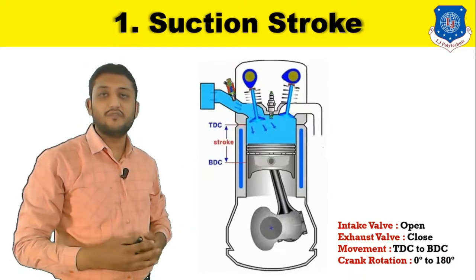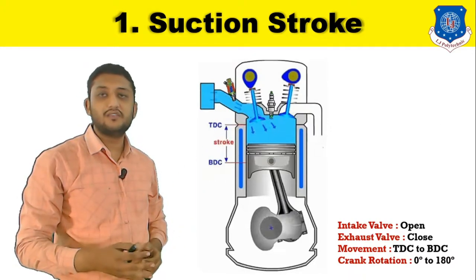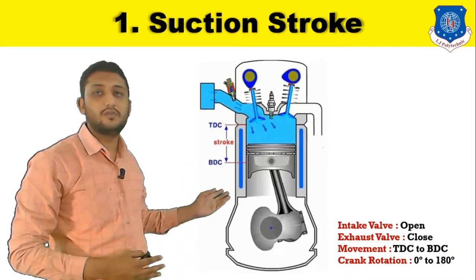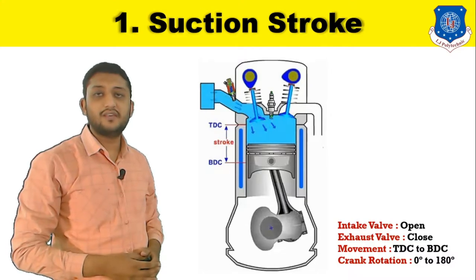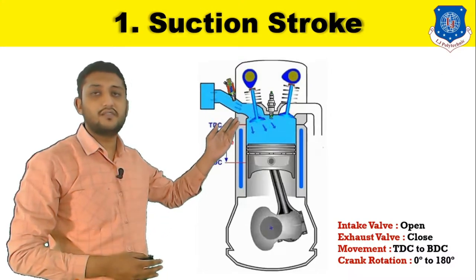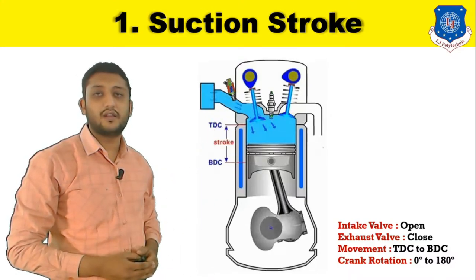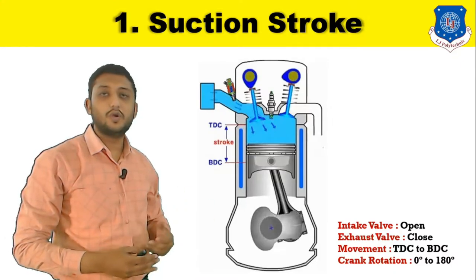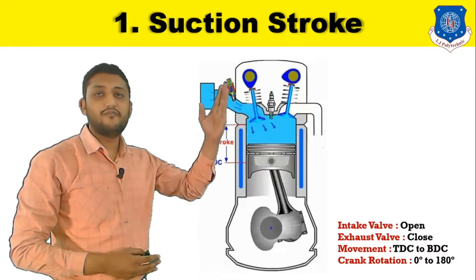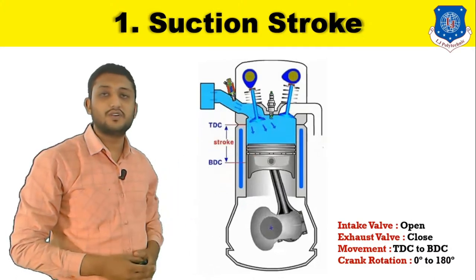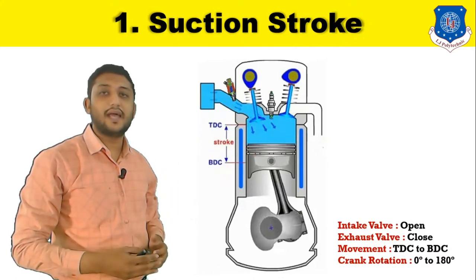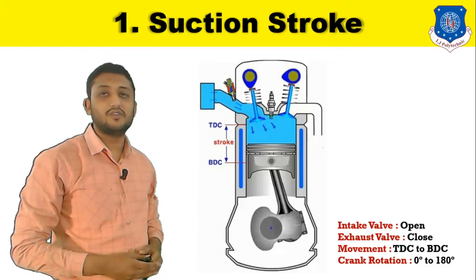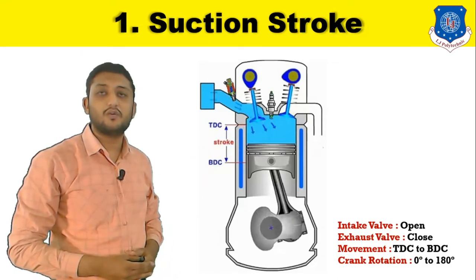The entering of the air and fuel mixture is due to the movement of the piston from top dead center to the bottom dead center. As the piston moves from TDC to BDC, there is a negative pressure inside the cylinder, and due to that negative pressure the air and fuel mixture enters the combustion chamber.